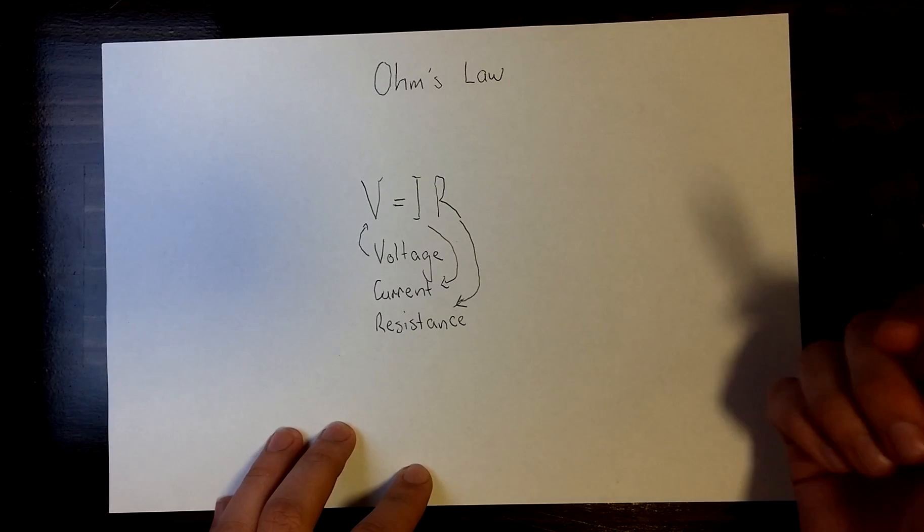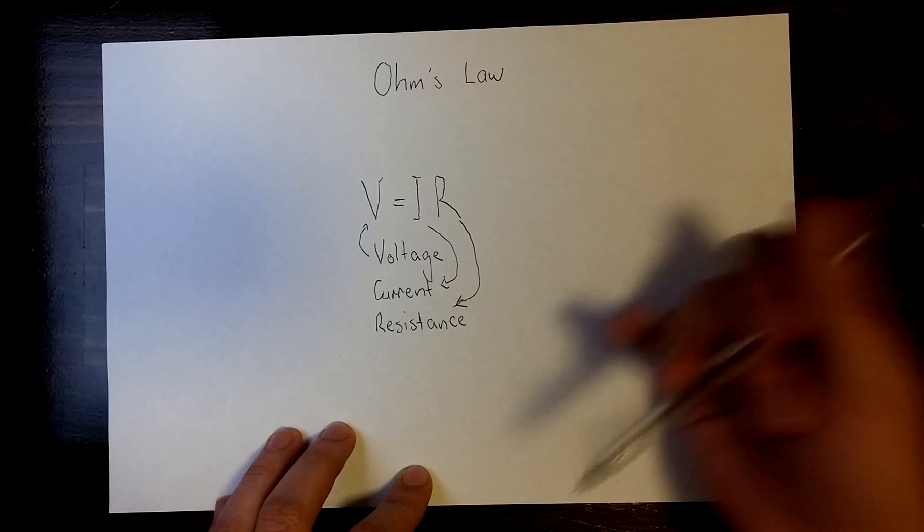Ohm's law, V equals IR, shows the relationship between voltage, current, and resistance. This means that if we have two of these three things, we are able to find out the other one.